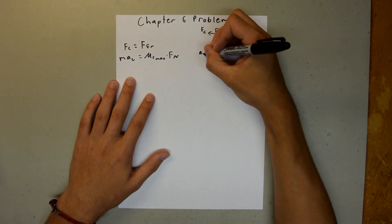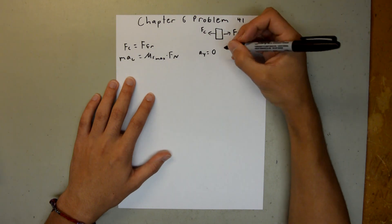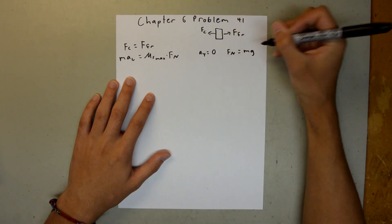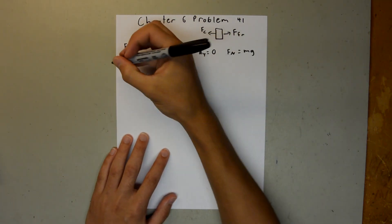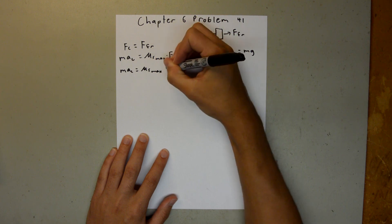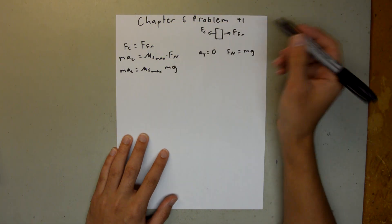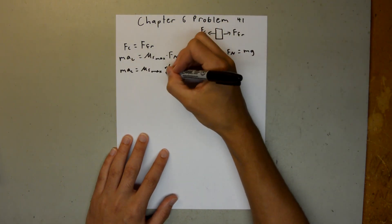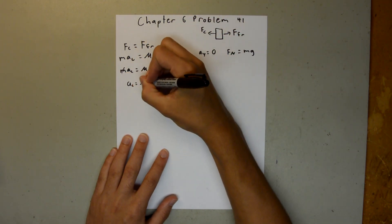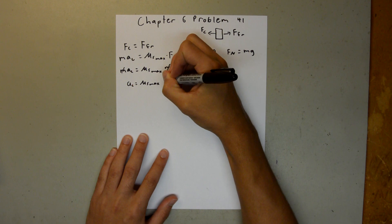And so we have no acceleration in the y direction, and that means that the normal force of the bicycle rider is equal to the weight force of the bicycle rider. So, then we can rewrite this and say m times a_c is equal to mu_s_max times m times g. And now you can see we have an m on both sides, so we can cancel those out. And then we'll have a_c is equal to mu_s_max times g.